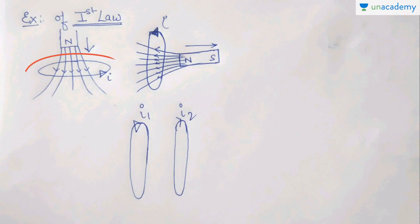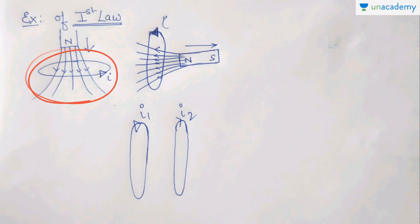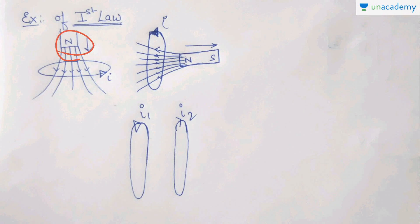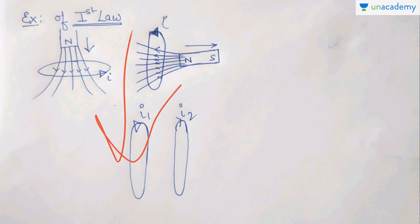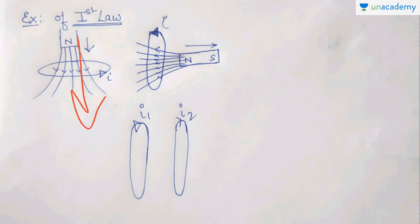Let us take this with an example. Suppose you have a coil placed horizontally with its plane. Now suppose a bar magnet with its north end facing the surface of the coil is just falling. You can see that when the north pole is falling downwards towards the face of the loop, the number of magnetic field lines passing through the loop will change.